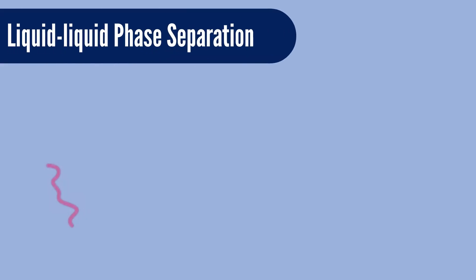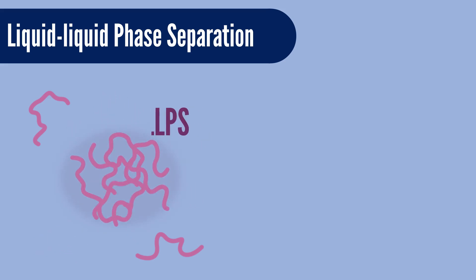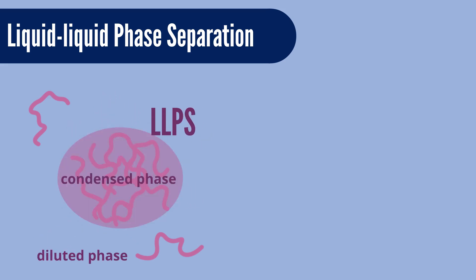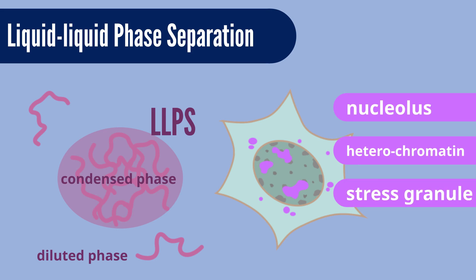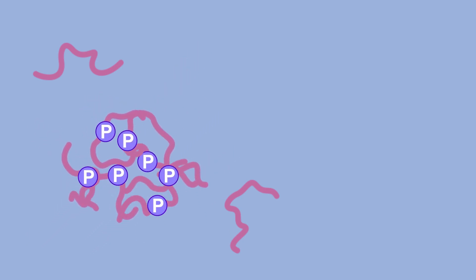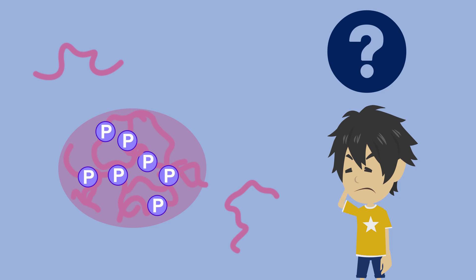Recent studies demonstrated that IDRs undergo liquid-liquid phase separation, LLPS, in the intracellular milieu, which underpins the structural and functional dynamics of various intracellular membrane-less organelles, such as nucleoli, heterochromatin, stress granules, and P-bodies. Phosphorylation and other post-translational modifications regulate LLPS, but the mechanism has been elusive so far.